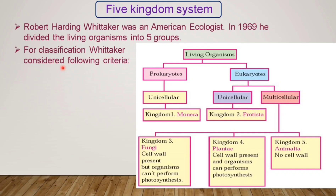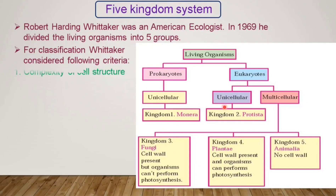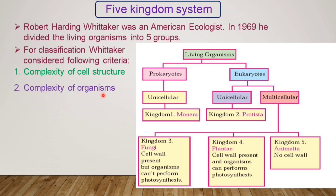For classification, Whitaker considered the following criteria. The first criterion is complexity of cell — he divided living organisms based on whether they are prokaryotes or eukaryotes. The second criterion is complexity of organisms — whether they are unicellular or multicellular. As seen in the diagram, prokaryotes are unicellular, while eukaryotes include both unicellular and multicellular organisms.